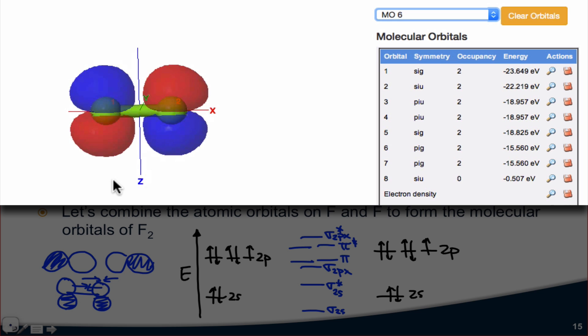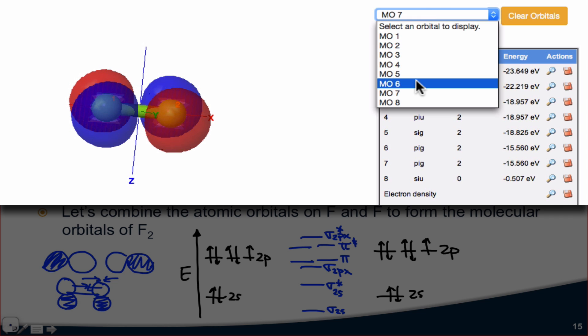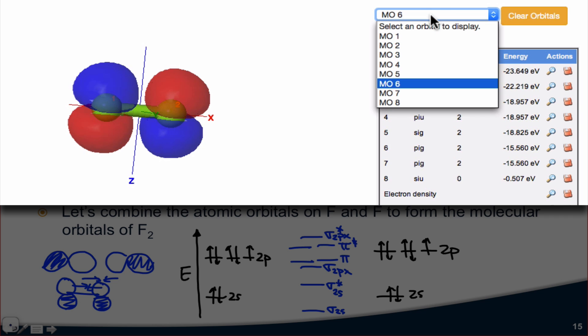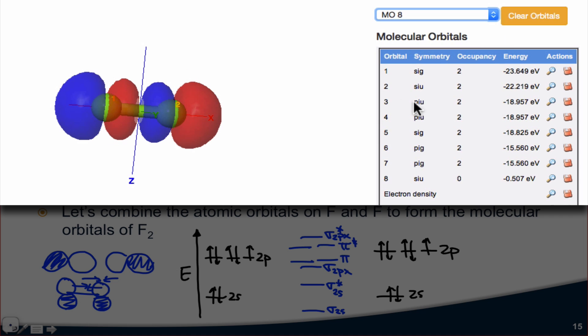MO6 is our first pi-antibonding orbital. So notice that it's constructed from the pz orbitals, but there's now a node between the two nuclei because the p orbitals are subtracted from one another such that these lobes have opposite sign. MO7 is another pi-antibonding orbital that's just at right angles to the first. And then MO8, which is the last orbital shown here, is an antibonding orbital constructed from the px orbitals where one is subtracted from the other.